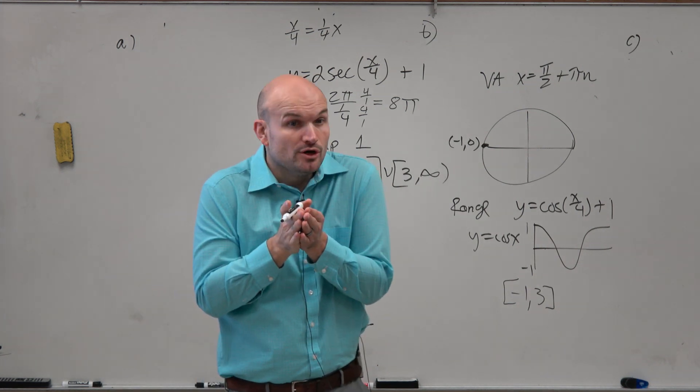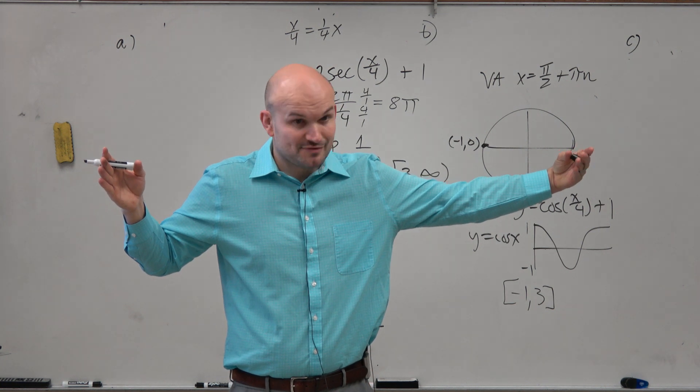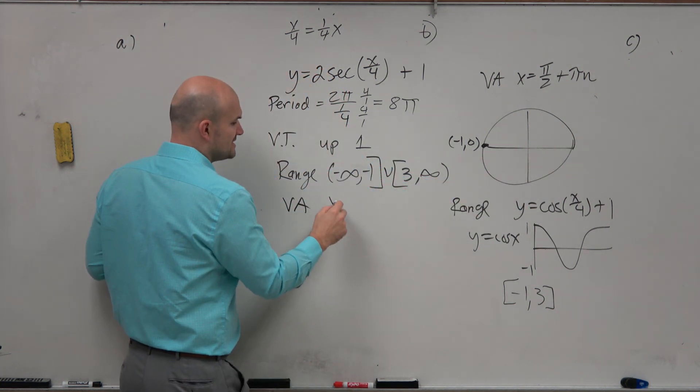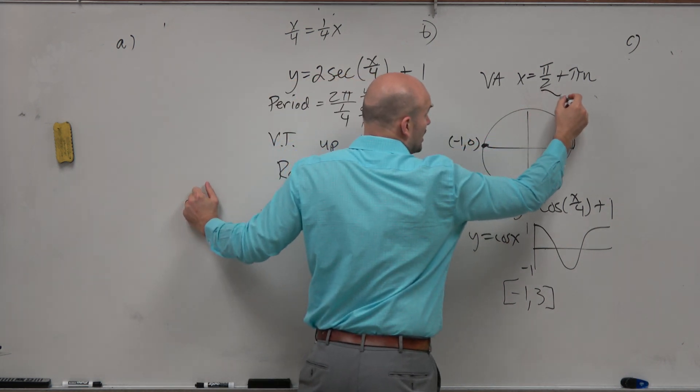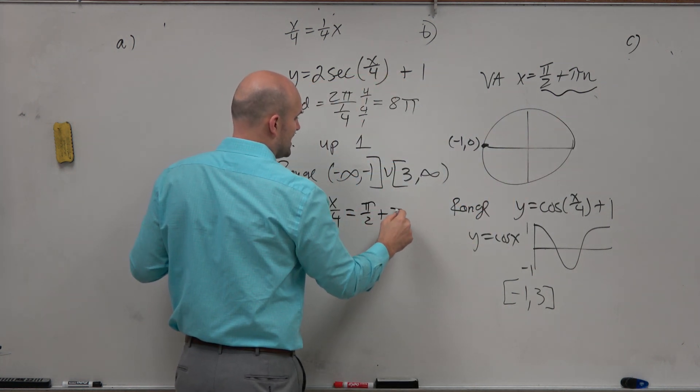But what did we do? We stretched the graph, right? So we have to include that. That's going to change the asymptotes. So all we're going to do is we're going to take whatever was inside of our function, x over 4, and we're going to set that to our equation for our asymptote, which is pi halves plus pi n.